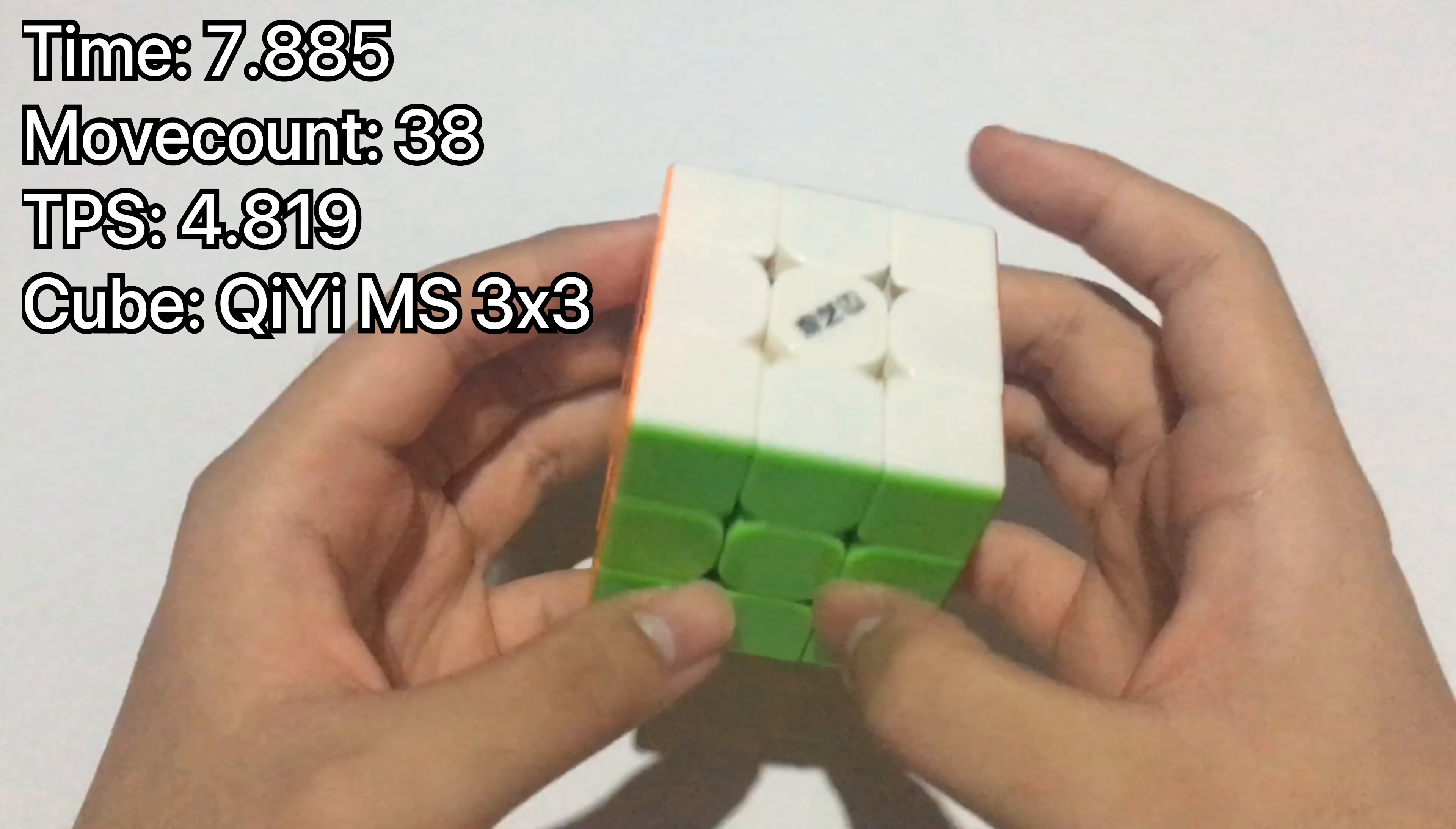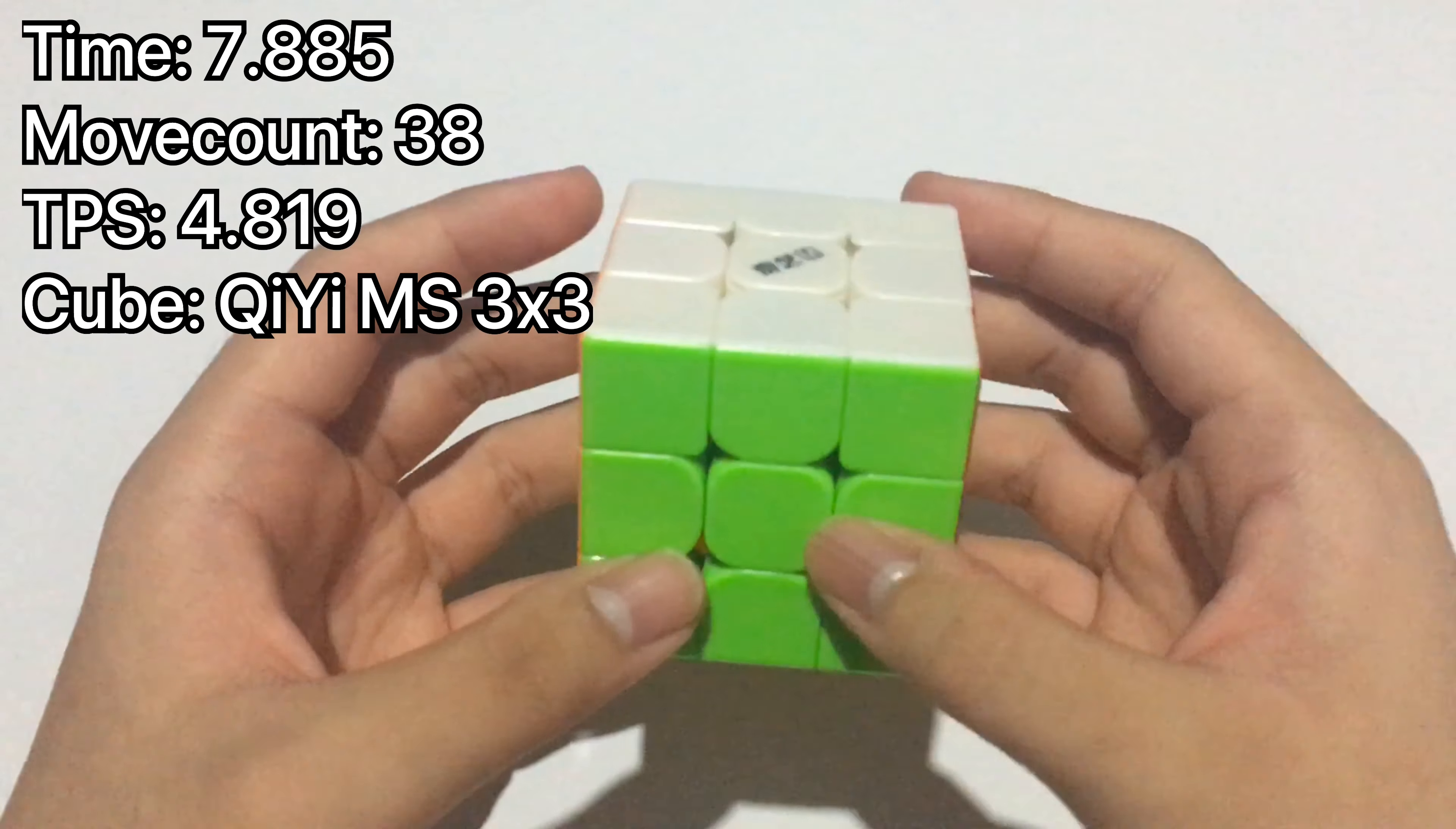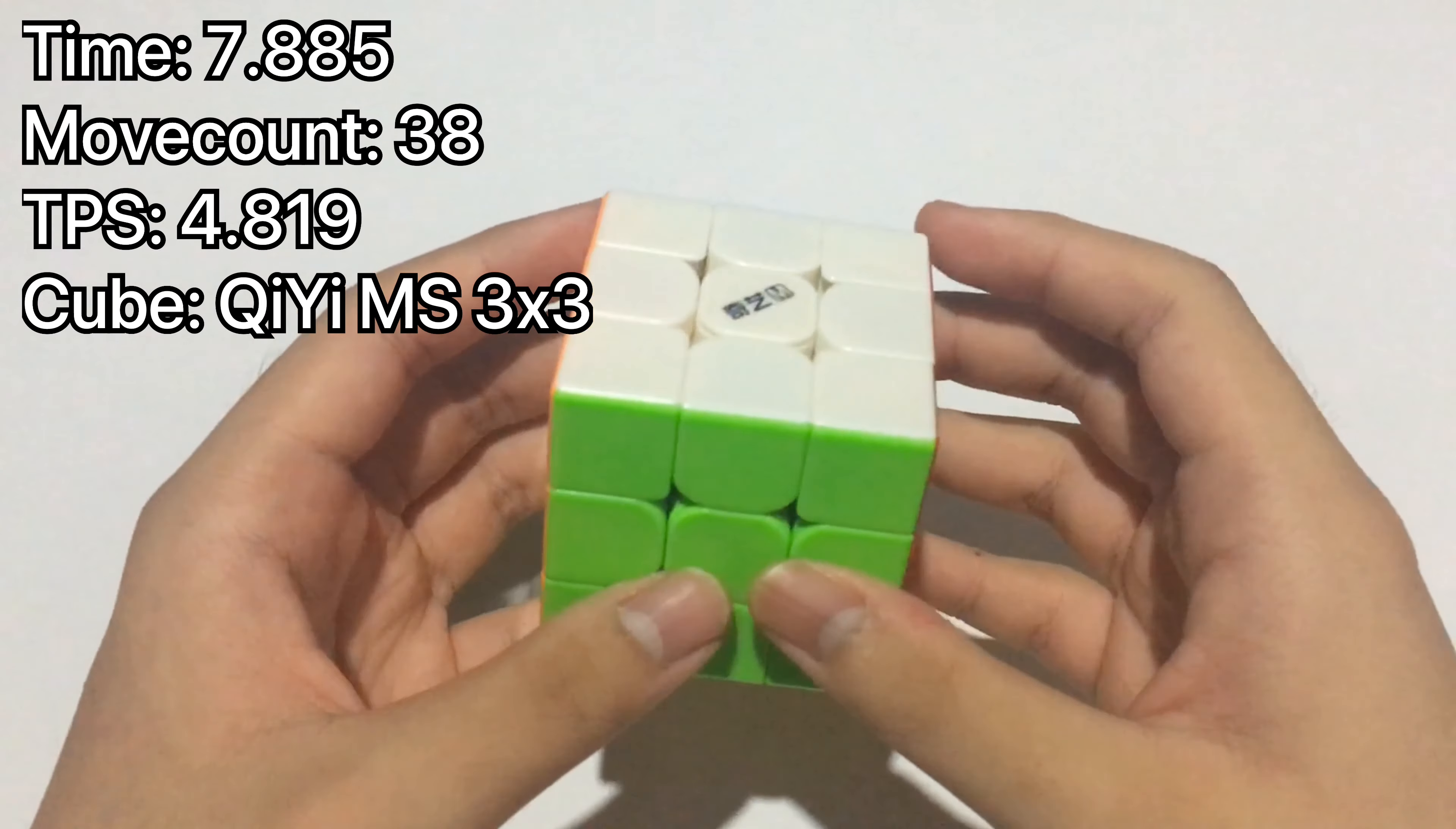As you saw in the analysis of the solve, the solution on the F2L wasn't that lucky, but I ended up with an easy OLL and PLL skip. Being lucky isn't a crime.